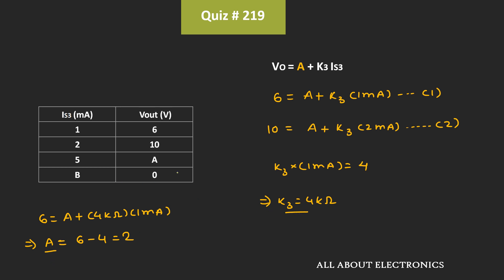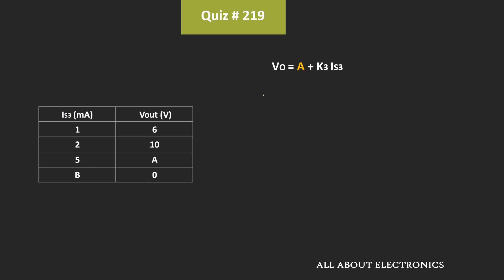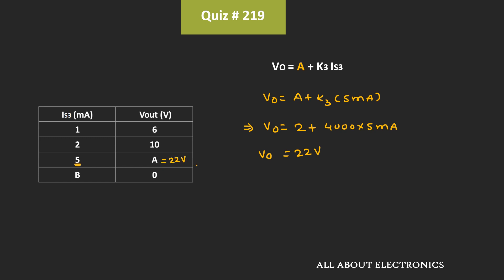Now we have the values of K3 and A, so let's find the missing table values. First, let's find the value of A when IS3 = 5mA: Vout = A + K3·5mA = 2 + 4000·5mA = 2 + 20 = 22V. That means whenever IS3 = 5mA, the output voltage A is equal to 22V.